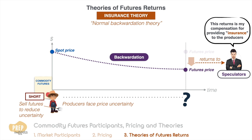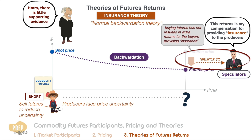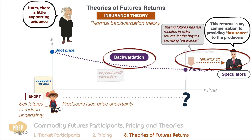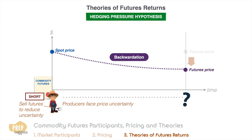However, this theory was found to be lacking based on empirical evidence. Firstly, buying futures has not resulted in extra returns for the buyers providing insurance. Secondly, many commodity markets are not in backwardation but are in contango, which would imply a negative return for providing insurance to producers. To better explain this, the hedging pressure hypothesis was introduced.